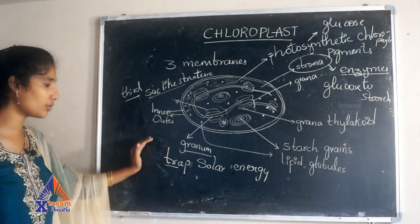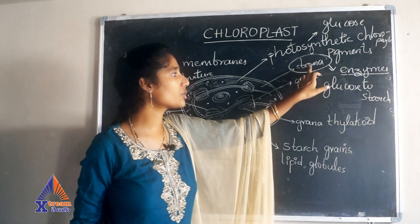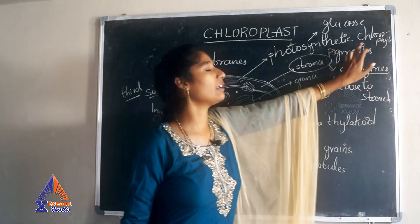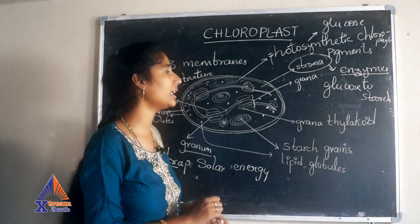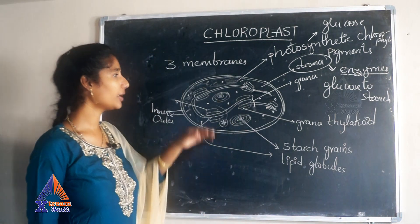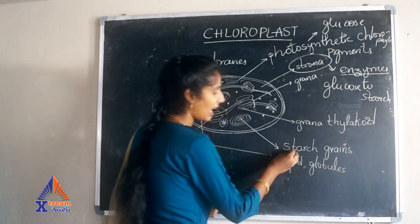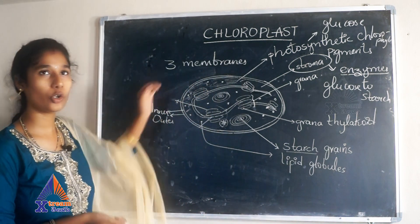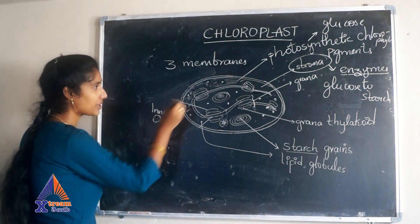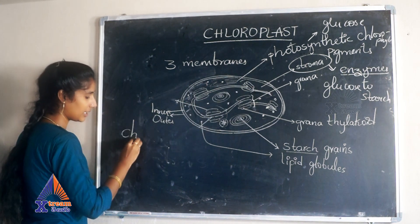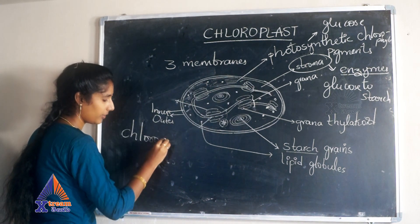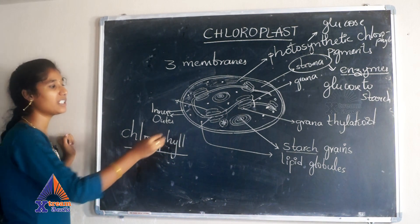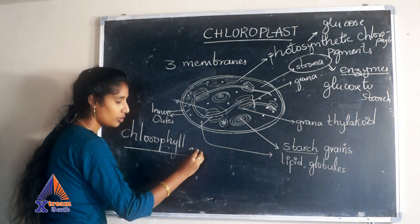The function of granum is to trap solar energy. The function of stroma is to convert glucose to starch by enzymatic activity. Different photosynthetic pigments are present in chloroplast, and starch grains and lipid globules are also stored in the chloroplast. One of the pigments is chlorophyll, which is the main pigment responsible for photosynthesis.